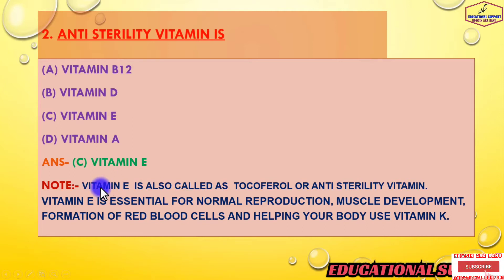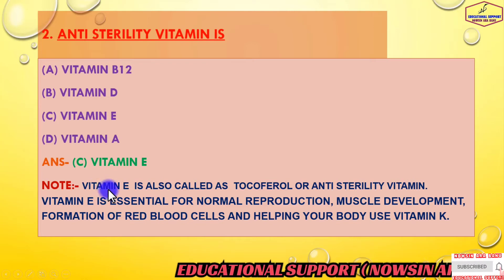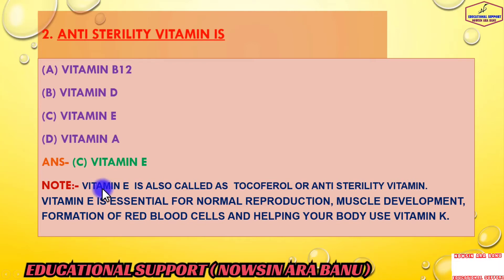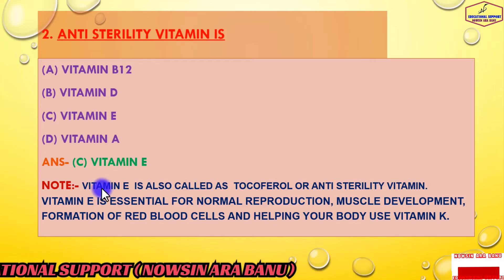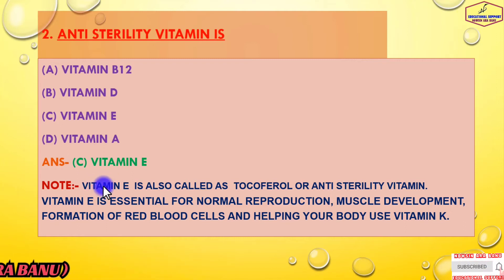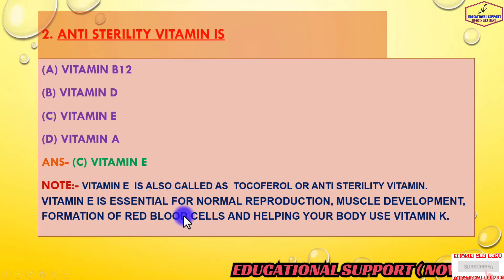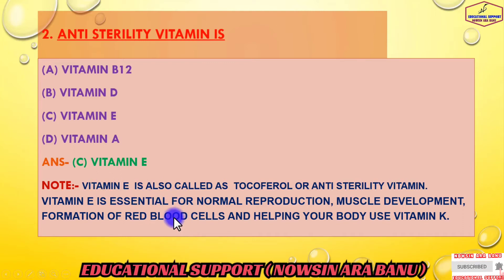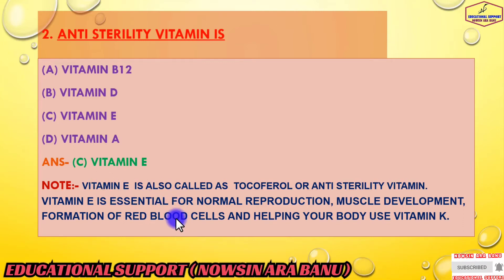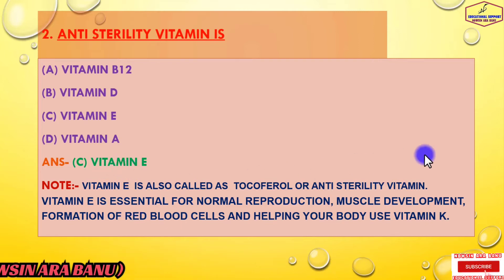A vitamin E-rich diet also supports healthy skin, healthy hair, and protects against free radical damage and the normal effects of aging. The best food sources of vitamin E include nuts and seeds — especially almonds, pecans, walnuts, and sunflower seeds. Good sources also include olive oil and green leafy vegetables such as raw spinach and steamed broccoli. So the answer is vitamin E.